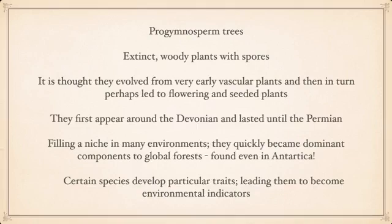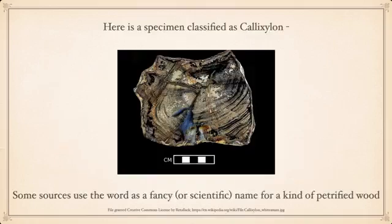Certain species also developed particular traits, leading them to become good environmental indicators. In other words, if you found a fossil of a specimen that you knew only grew in a certain climate and had certain soil conditions, then you knew that that particular locality at the time had those conditions. Here's a specimen classified as Talisguiland, which again is Archaeopteryx — you'll see in many places people use it as a term for fossils of the inner woody part of the tree itself.